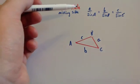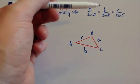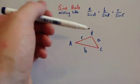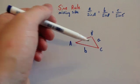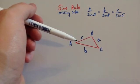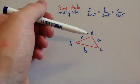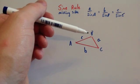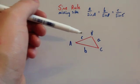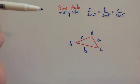So you've got a over sin A equals b over sin B equals c over sin C. If you divide a by the sine of angle A, it would be exactly the same as b divided by the sine of angle B, which would be exactly the same as c divided by the sine of angle C.